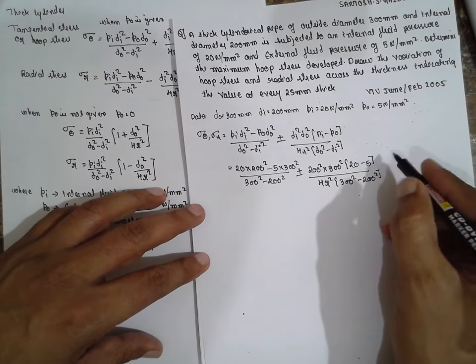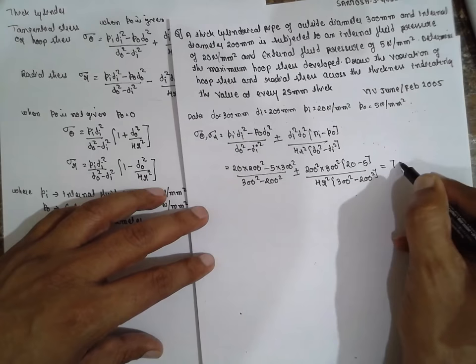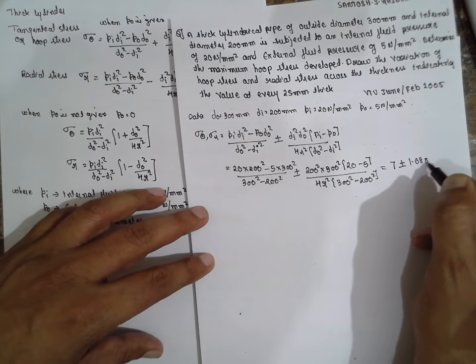If you simplify, you will obtain the value 7 plus or minus 1.08 into 10 raise to 6 divided by 4 R square.